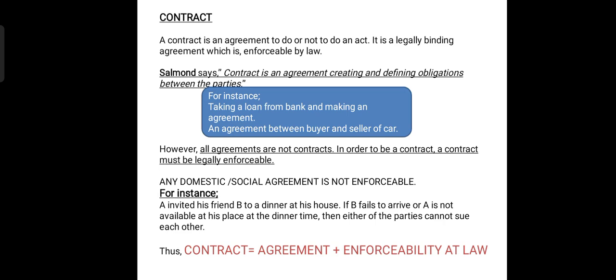All agreements are not contracts — there are some agreements that lack the essential element of legal enforceability. Those agreements are called domestic or social agreements which are not enforceable at law. For example, A invited his friend B to a dinner at his house. If B fails to arrive or A is not available on the dinner date, then either party cannot sue the other. Thus, it can rightly be said that contract equals agreement plus enforceability at law.